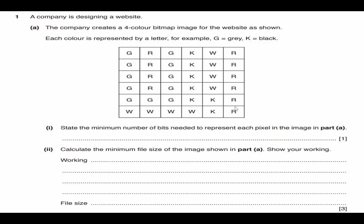A company is designing a website. The company creates a four color bitmap image for the website as shown. I'm going to pause right there and I'm going to say, you know what, I need four colors. I'm going to start calculating the bit depth because I'm going to need to know that. So off to the side, I start calculating that. Two to the power of one is two colors. Two to the power of two gives me four colors. I now know the bit depth and that answers A part one.